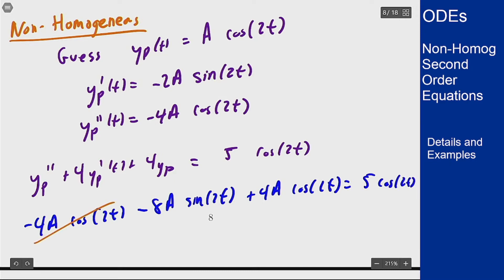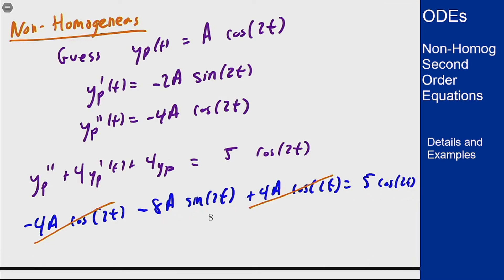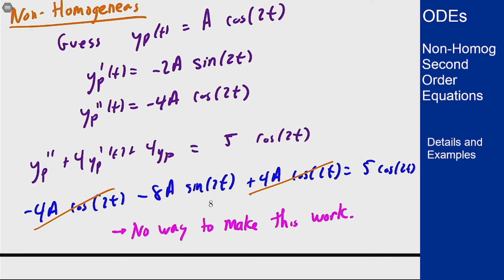The cosine terms cancel, and we're left with a sine of 2t term that must match a cosine of 2t term — those are not equal for all t. There's no way to pick a to make this work.